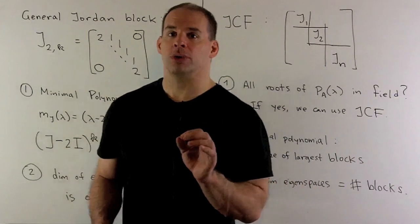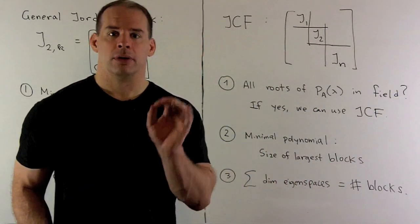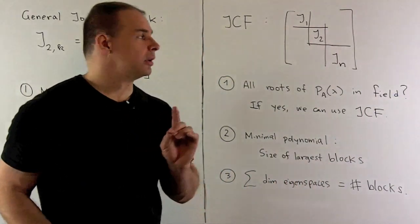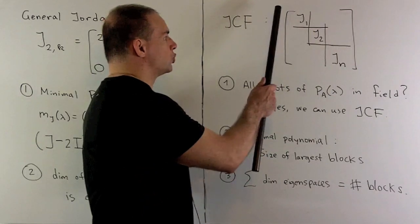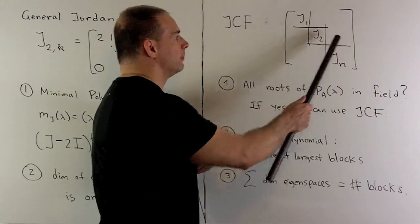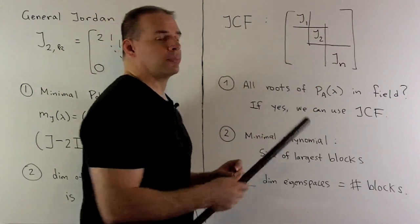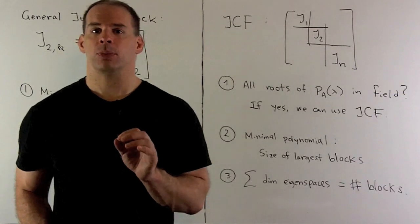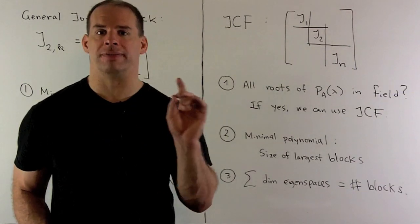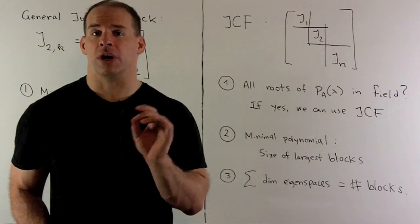Now for the general Jordan canonical form, a few things we go through. We're going to have Jordan blocks down the main diagonal, zeros everywhere else. First consideration, when we take our characteristic polynomial and factor all the roots in our field of interest.